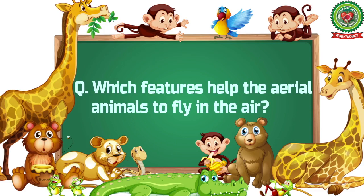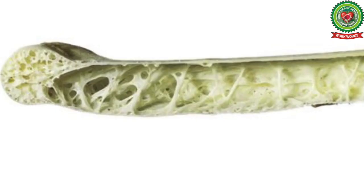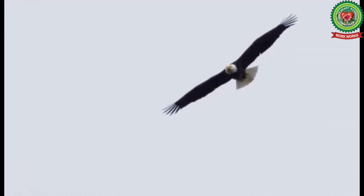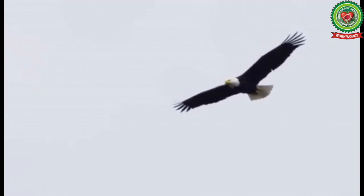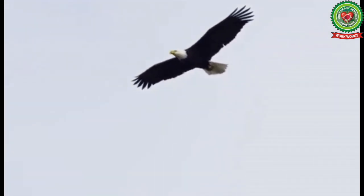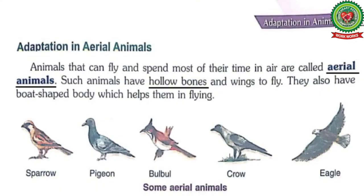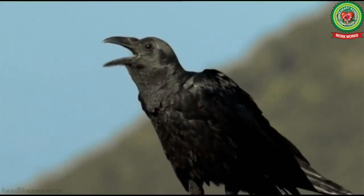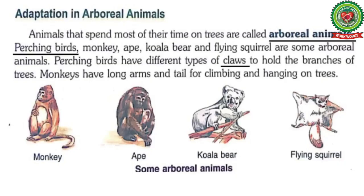Now the question arises: which features help the aerial animals to fly in the air? The answer is they have hollow bones, they have wings, and they also have a boat-shaped body that cuts the air current and helps the birds to fly in the air. The examples of aerial animals are sparrow, pigeon, bulbul, crow, and eagle.